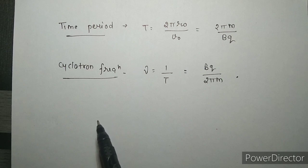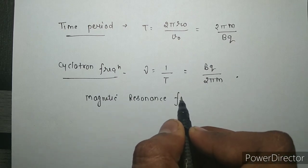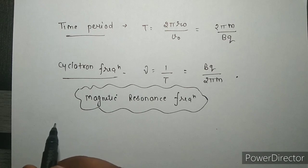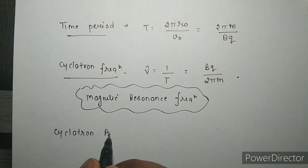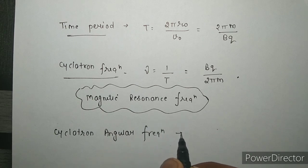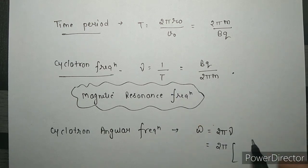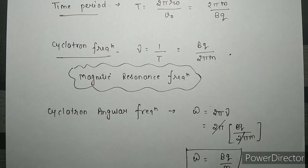This cyclotron frequency is also known as the magnetic resonance frequency. The cyclotron angular frequency omega is given by ω = 2πν. Substituting ν = Bq / (2πm), the 2π cancels and we get ω = Bq/m, where omega is the cyclotron angular frequency.